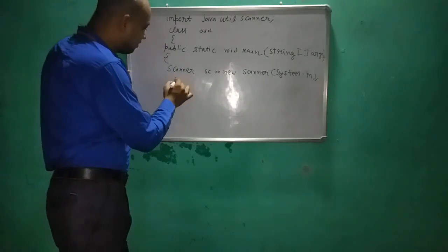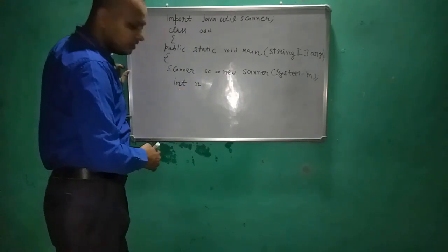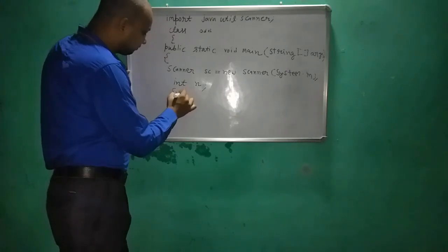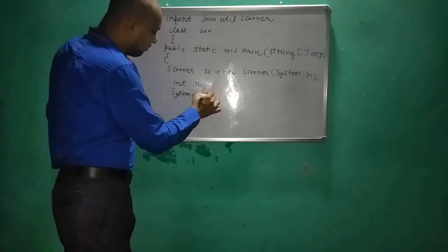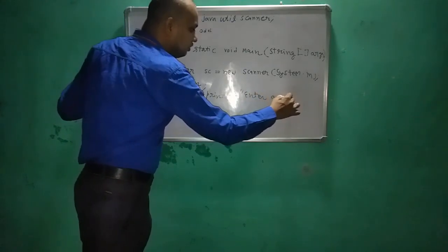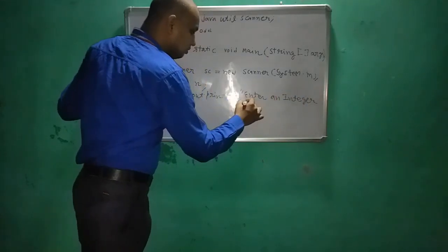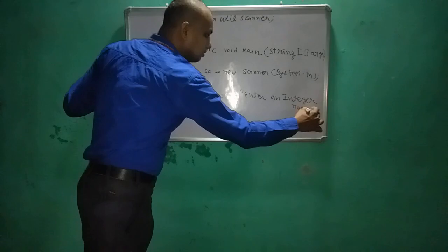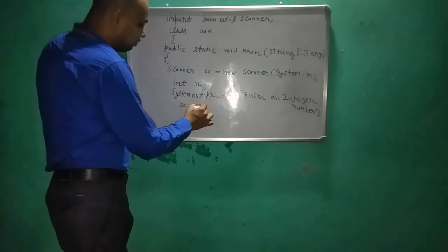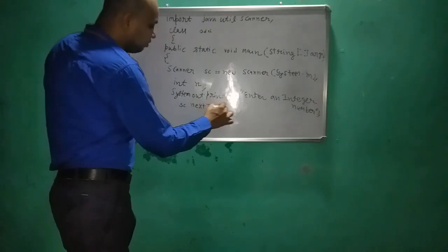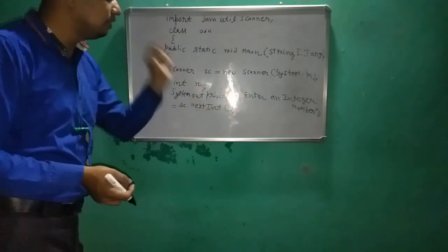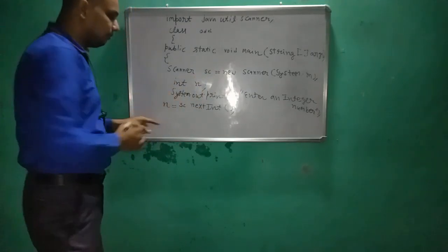Now we create a variable because we need to store the integer value to check. We declare an integer variable 'n'. Then we print a message to the user: 'System.out.print("Enter an integer number")'. After the user sees the message, we accept their input using 'nextInt()' method and assign it: 'n = sc.nextInt()'.